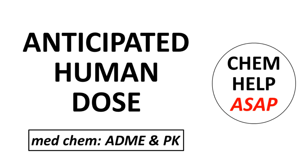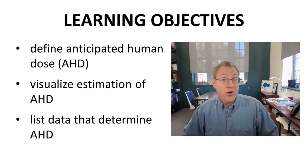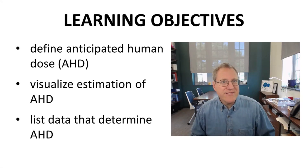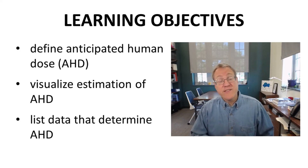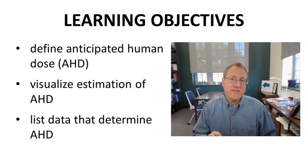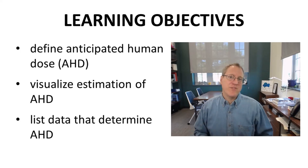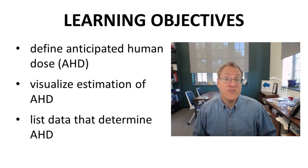Welcome to Chem Help ASAP. In this video, we will discuss the challenge of pooling the early ADME, PK, and efficacy data to estimate the anticipated human dose. Upon completion of this video, students will be able to define anticipated human dose or AHD, visualize how AHD is estimated from activity curves, and list other types of data that help estimate AHD.